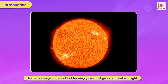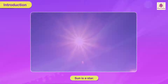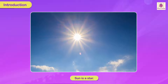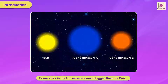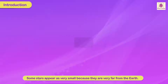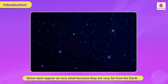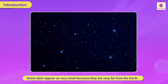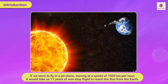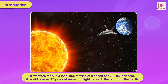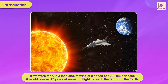A star is an unimaginably large sphere, like a ball of hot burning gases, that gives out heat and light. Our Sun is a star. Some stars in the universe are much bigger than the Sun but appear as very small points of light in the sky because they are very far from the Earth. If we were to fly in a jet plane moving at 1000 kilometers per hour, it would take us 17 years of non-stop flight to reach the Sun from the Earth.